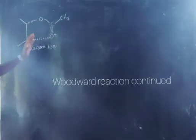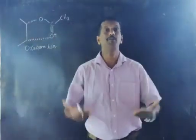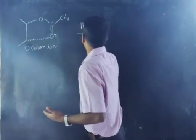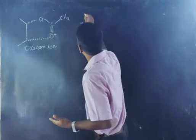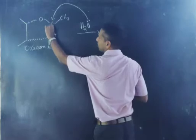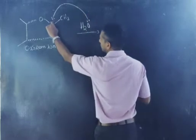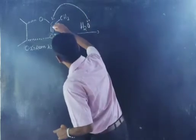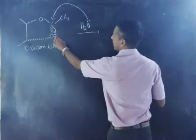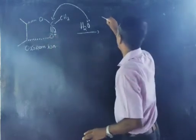This is the oxonium ion, and this reaction is taking place in the presence of moisture or water. The water molecule H₂O will attack on this carbonyl carbon — this is a C=O group and this carbon is partially positive. The lone pair electron of the oxygen atom will attack on this carbonyl carbon, and at the same time this bond's electron will be moved to oxygen, removing the positive charge.